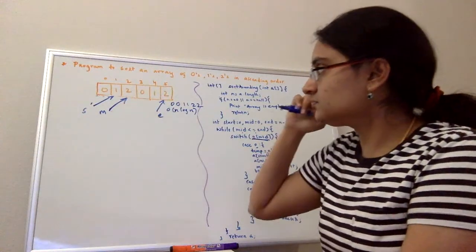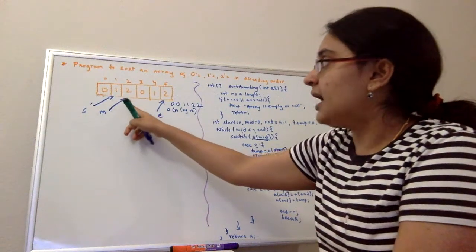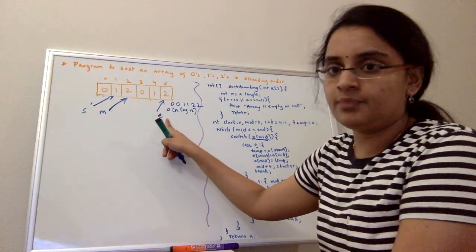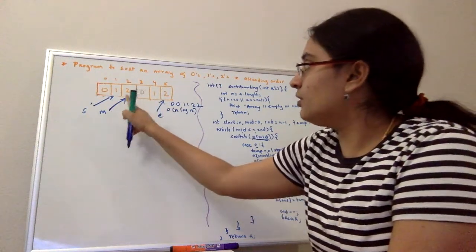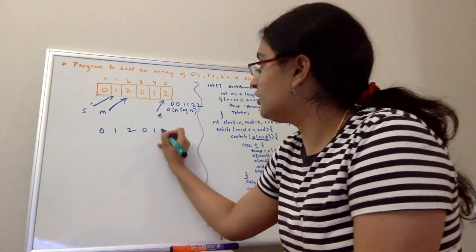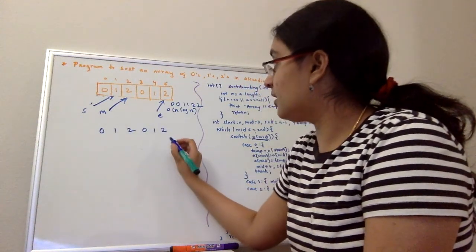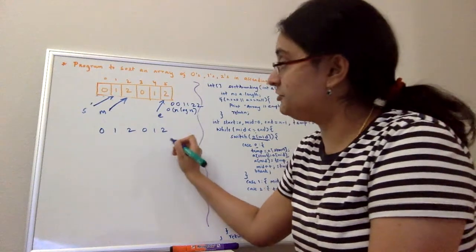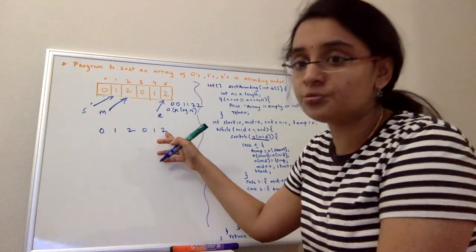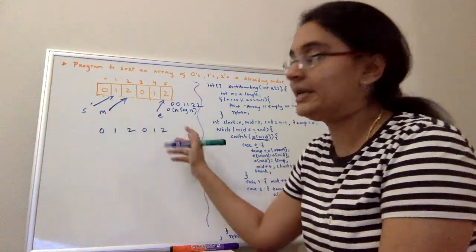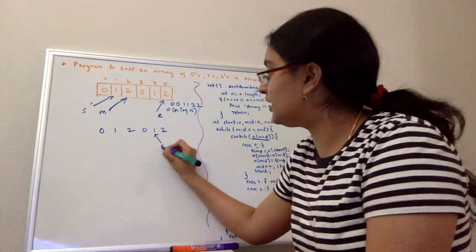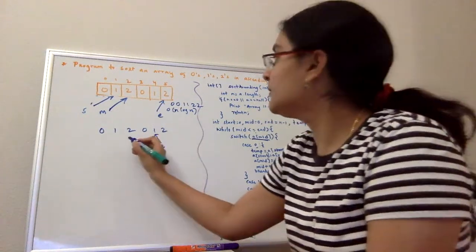Now mid is two. When mid is two, I'll try to swap mid and the end elements. So now even after swapping, our array will be zero, one, two, zero, one, two. But after swapping, we know that definitely your last element is two, because it was two, we tried to swap mid and end, right? So after swapping, your end index should be decremented and pointed to the previous element, and your mid still stays at the same position.